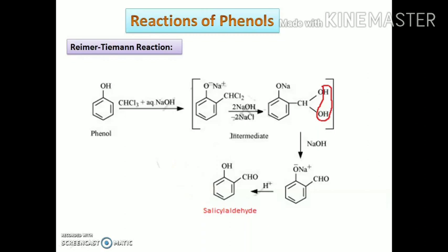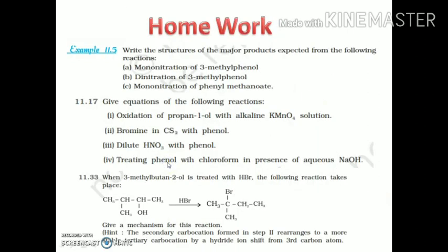To summarize: in the Kolbe-Schmitt reaction, salicylic acid is the major product, while in the Reimer-Tiemann reaction, salicylaldehyde is formed with the aldehyde group at the ortho position with respect to the phenol. As homework: write the structures of the major and minor products expected in the mononitration of 3-methylphenol, dinitration of 3-methylphenol, and mononitration of phenylmethanol.